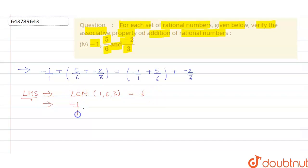Now minus 1 upon 1 gets multiplied by 6 plus 5 by 6 plus minus 2 by 3 gets multiplied by 2, which equals minus 6 by 6 plus 5 by 6 minus 4 by 6, and that will come to minus 5 by 6.